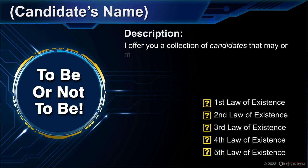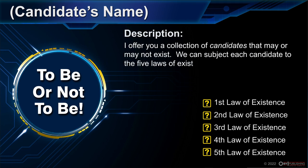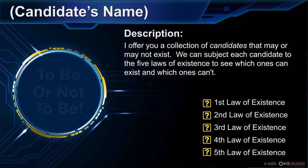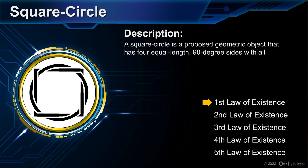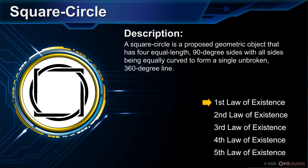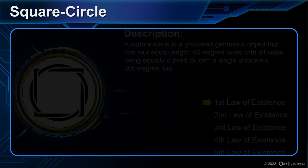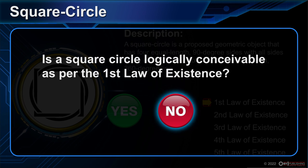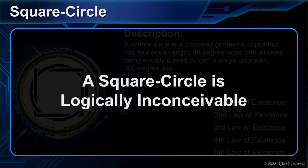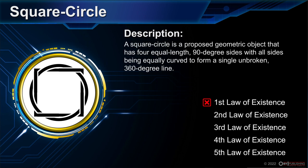Future videos will help to provide clarity for some of the more complex topics. In the meantime, let's subject a collection of candidates to the five laws of existence to see which ones can exist and which ones can't. Our leadoff batter is a square circle — a proposed geometric object that has four equal-length 90-degree sides with all sides being equally curved to form a single unbroken 360-degree line. Is a square circle logically conceivable as per the first law of existence? No. True, you could speak the words "square circle" and offer a definition, but based on its definition it cannot be actuated. Therefore, a square circle is inconceivable, and gets summarily eliminated from the onset.